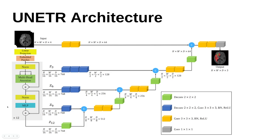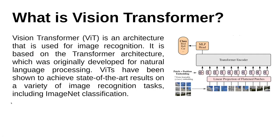This is the block diagram of the UNETR architecture taken from the original paper. Since we are going to implement it for 2D segmentation, please make sure that you remove the D part whenever you see this diagram, because D refers to depth. For 2D we only have height, width, and number of channels. Instead of a 4-channel image we are going to use an RGB image. It begins with an image, then linear projection, then embedded patching, then the transformer encoder block, and after that begins the CNN decoder part.